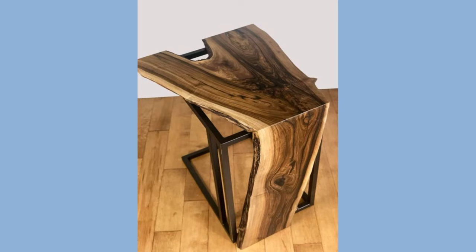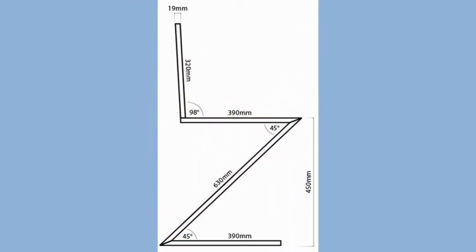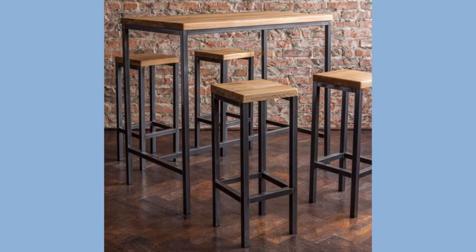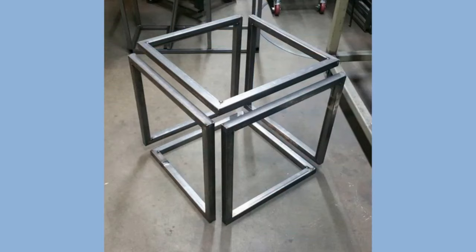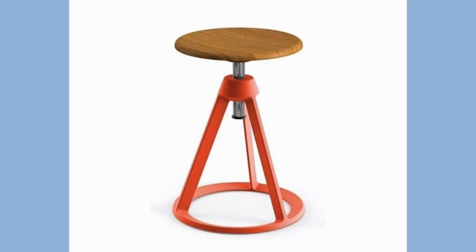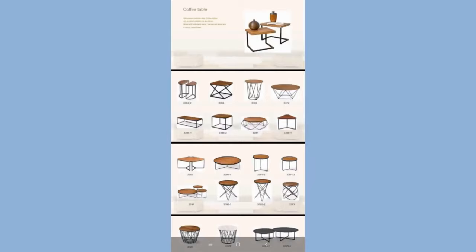A stool is generally distinguished from chairs by their lack of arms and back. Variance exists with one, two or five legs, and these various stools are referred to by some people as backless chairs. Some modern stools have backs. Folding stools can become flat typically by rotating the seat to be parallel with the fold-up legs. Some stools are designed with three legs because these points define a plane.